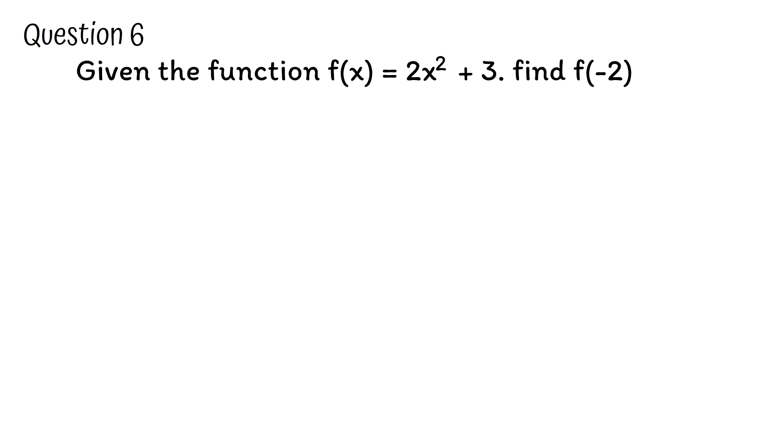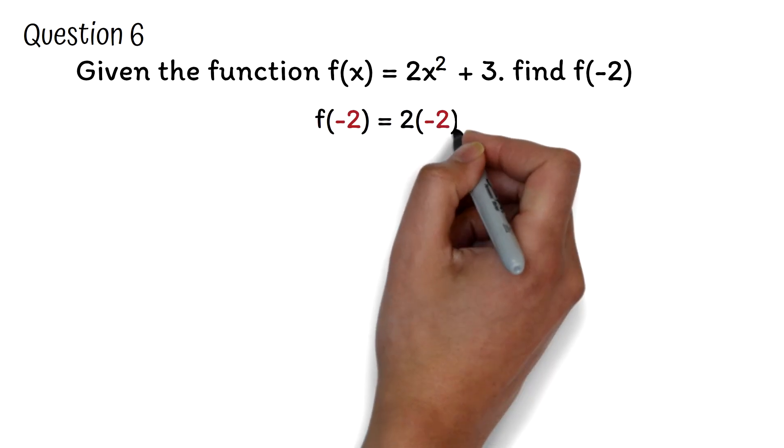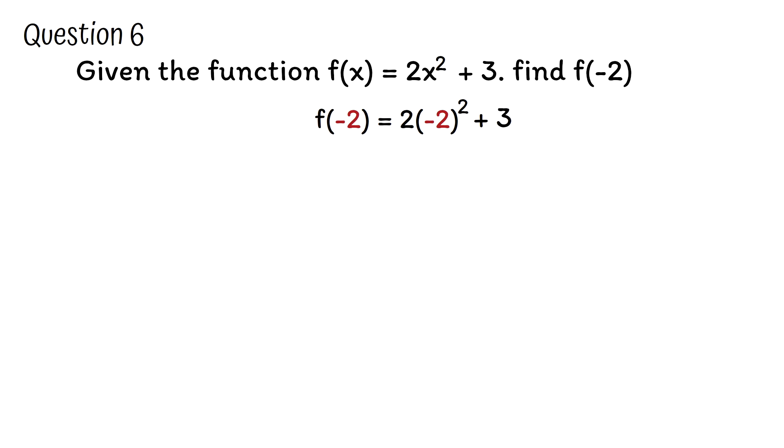Question 6. Given the function f(x) = 2x² + 3, find f(-2). To find f(-2), we need to substitute -2 for x in the function. Wherever you see x, just replace it with -2. So we have f(-2) = 2(-2)² + 3. Please be very careful when substituting a negative number. I always put it in parentheses. This is to make sure the negative is also squared.